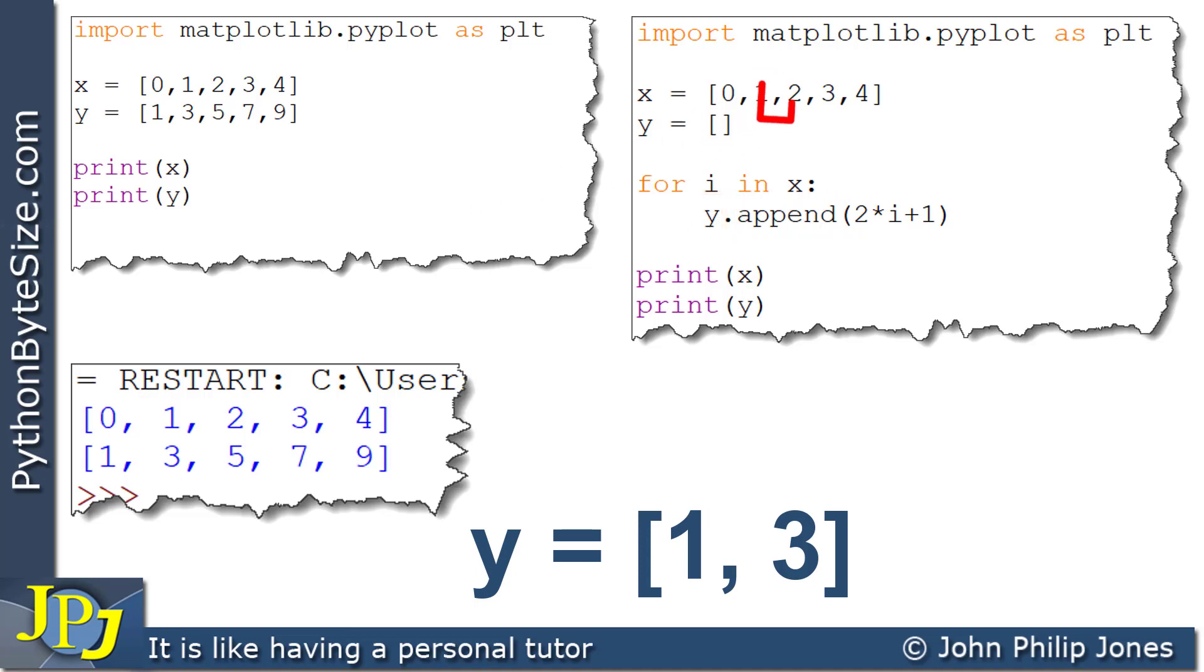Now we go around the loop again. And this time, we pick up the 2. This becomes 2 times 2, which is 4, plus 1 is 5. So then we append that 5 to y. And you can see below that y has now got within it 1, 3, 5.